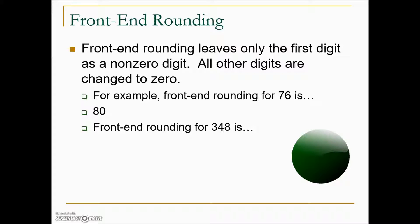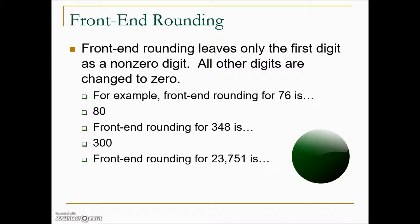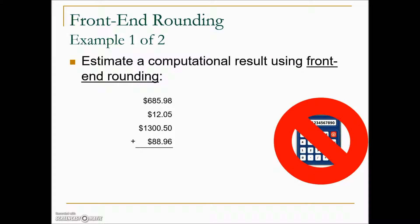If we use front-end rounding for three hundred forty-eight, the front number is three. Immediately to the right is four — not five or greater — so we leave the three and zero out the other two digits, giving us three hundred. For 23,751 using front-end rounding, you look at the lead digit two; immediately to the right is a three, not enough to alter the two, so we zero out the remaining digits leaving us with twenty thousand.